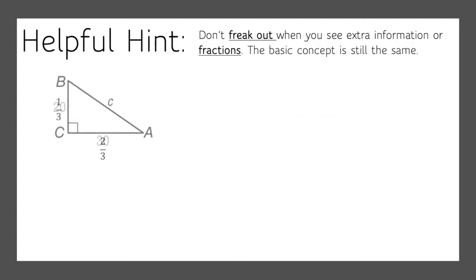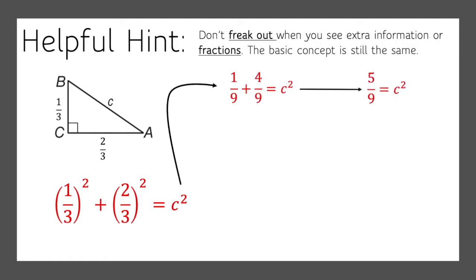Let's try one with fractions. Again, don't freak out. Process is still the same. So we've got our two legs, 1 third and 2 thirds. So 1 third squared plus 2 thirds squared equals c squared. Let's come up here. And we've got 1 ninth plus 4 ninths equals c squared. So that's 5 ninths equals c squared. So we'll take the square root of both sides. And we get c equals the square root of 5 ninths. Now, you can't have a fraction in the radicand. So we're going to have to break that up. And we'll do the square root of 5 over the square root of 9. And that equals the square root of 5 over 3.